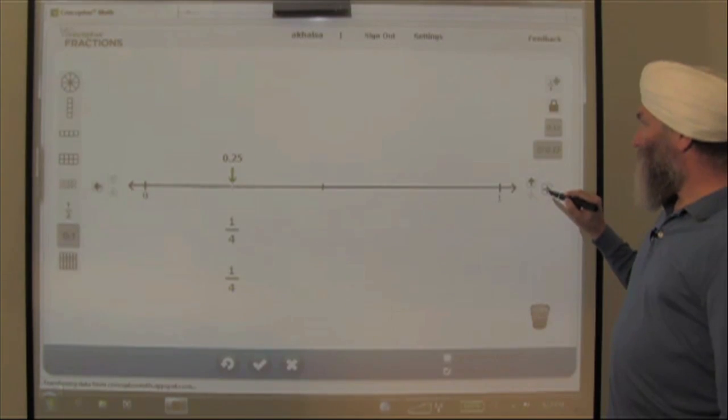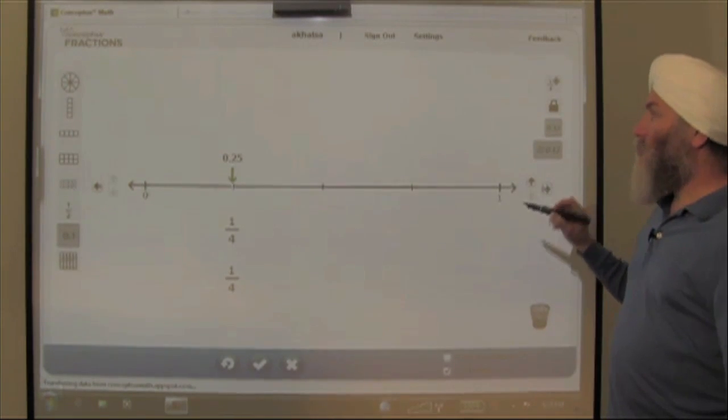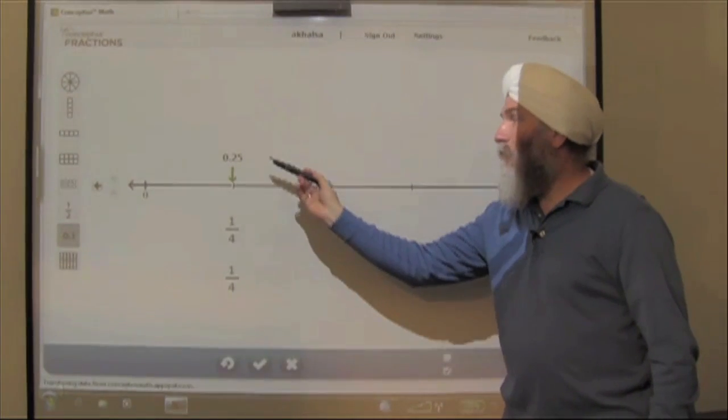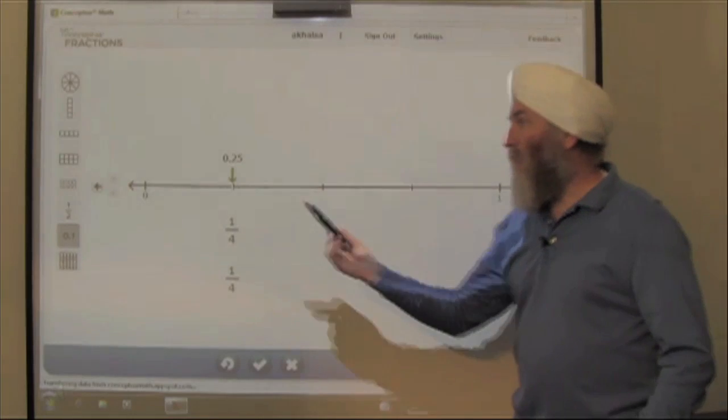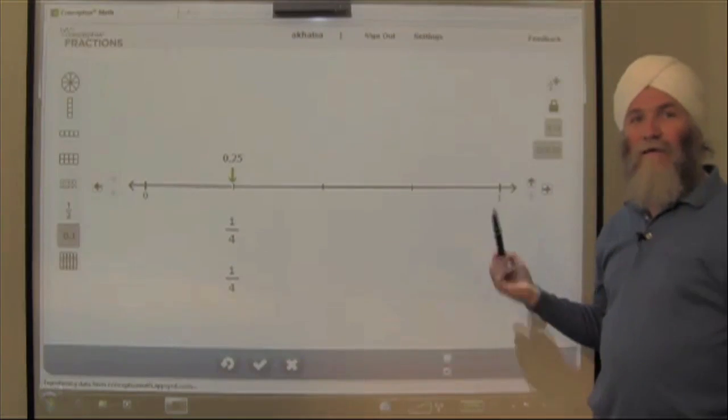If I go ahead and put those partitions here and show my fourths, there it is: 0.25 and 1/4. There are two names for the same value, 1/4 the distance between 0 and 1.